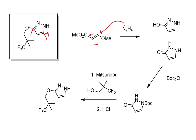A Vertex scientist, on the basis of previous work, expected the Boc group to go on this nitrogen when treated with Boc anhydride — and that turned out to be the case. The Boc protection was required for the next step, a Mitsunobu reaction, which is a way to convert a hydroxyl into a leaving group in situ. The Mitsunobu was used to form the ether linkage, and then the Boc group was removed with hydrochloric acid to reveal the NH.